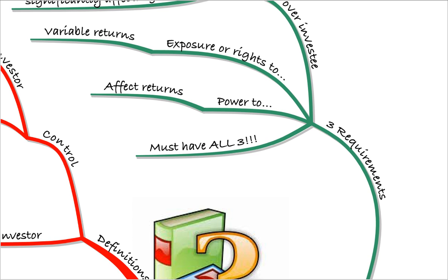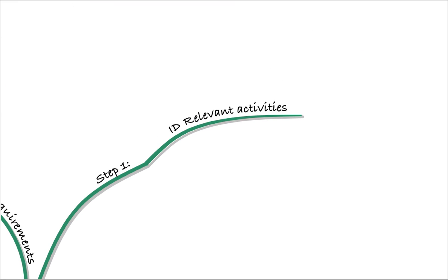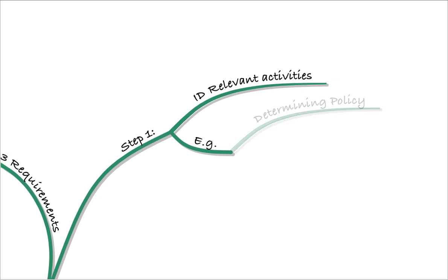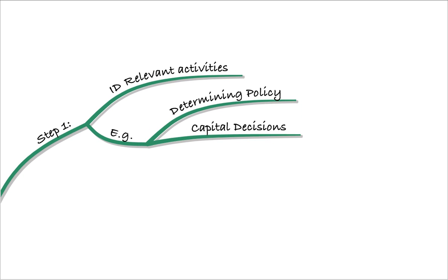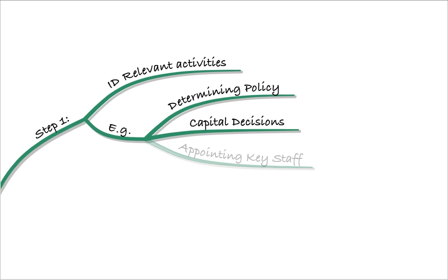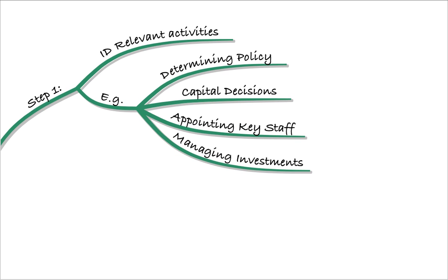If you get a question in the exam, here's how to approach it using three steps. Step one: identify the relevant activities. We have to have power to direct these activities — if you don't, you don't have control. Relevant activities include things like determining policy (e.g., if you had a majority on the board), capital decisions, investment decisions, appointment of key staff, and managing investments. We need to see whether the investor has power over those sorts of activities.